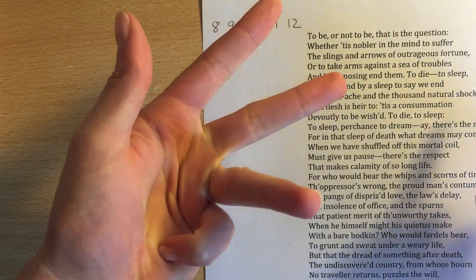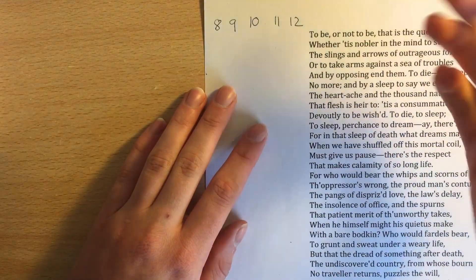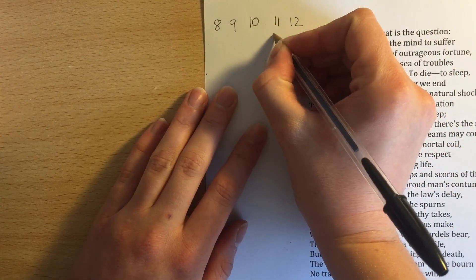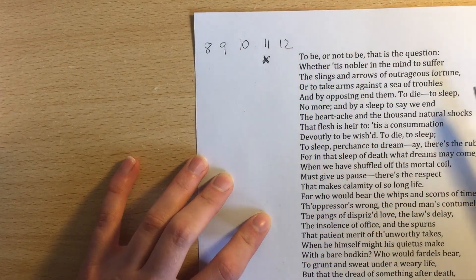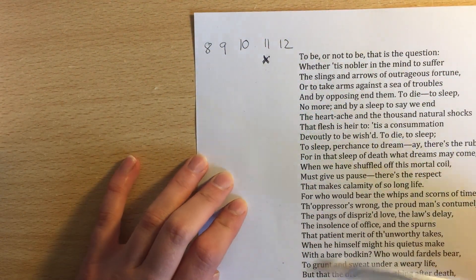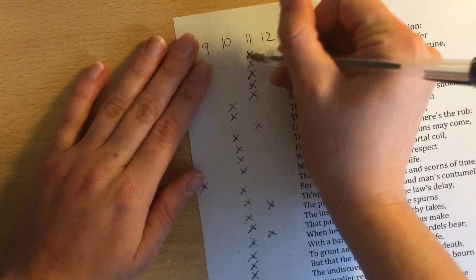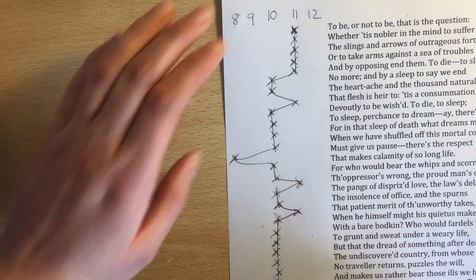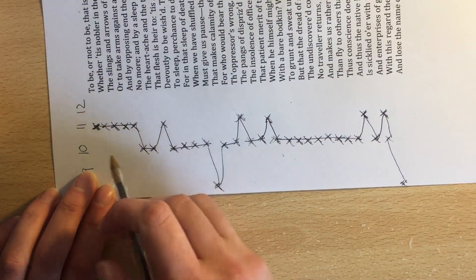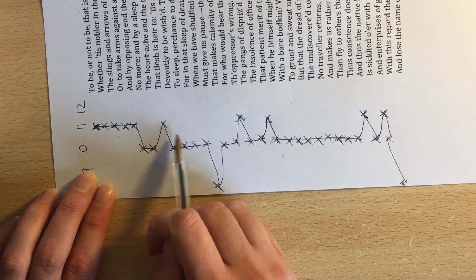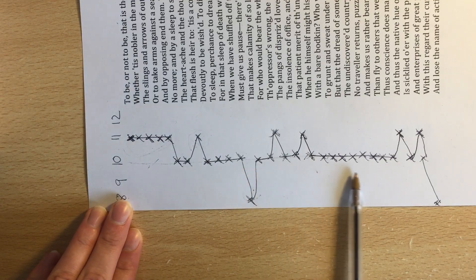So: "To be or not to be, that is the question" — there are 11 syllables in that first line, so you're going to put a little cross in your 11 column. You're going to do that, counting all the syllables in each line, for the entirety of the speech. Once you've marked all your crosses, you're going to join the dots, and then turn the paper sideways. And there you'll have a heartbeat monitor.